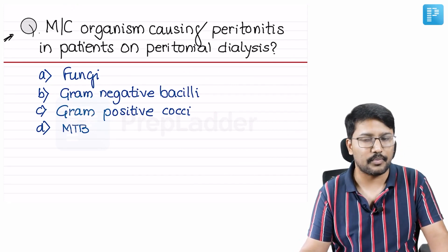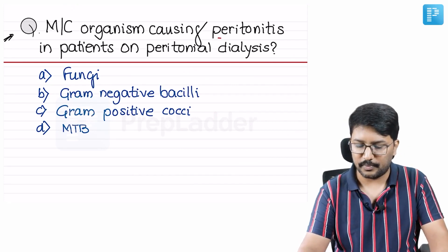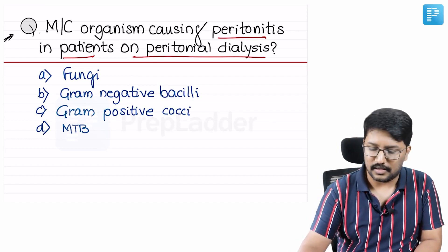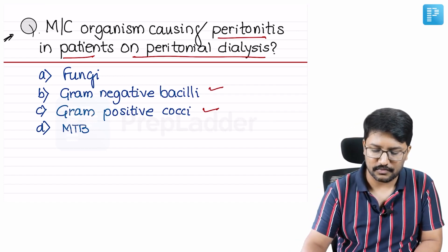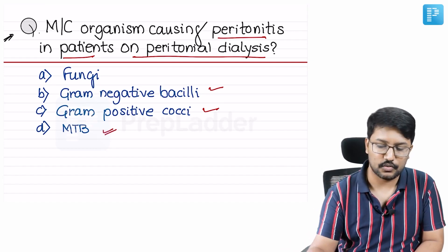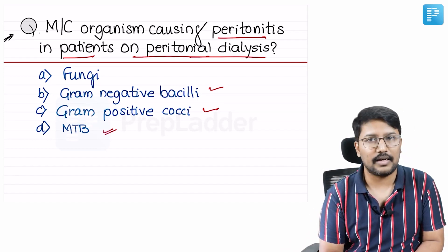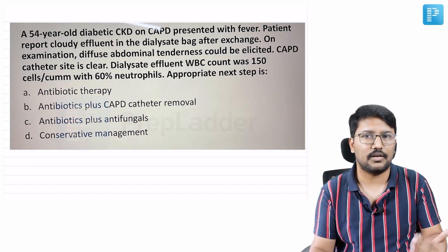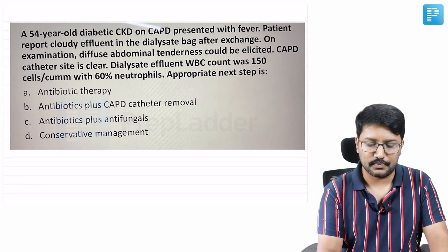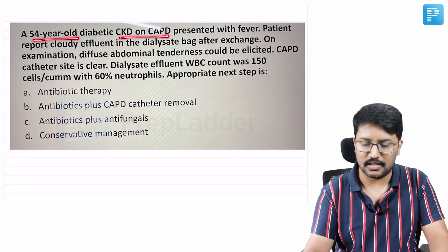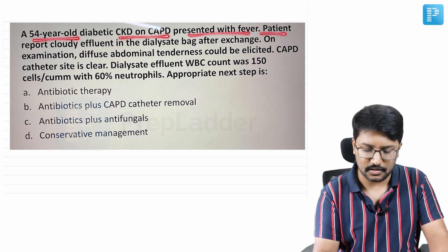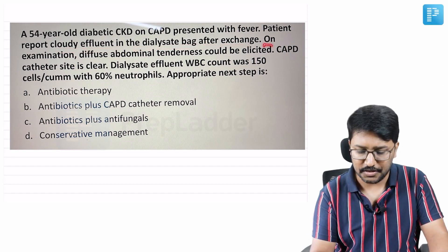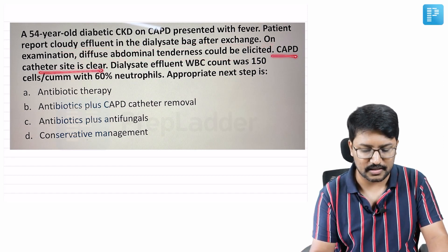Moving on to the next question — a last year INIS repeat: most common organism causing peritonitis in patients on peritoneal dialysis. Options are fungi, gram-negative bacillus, gram-positive cocci, and Mycobacterium tuberculosis. Case scenario: 54-year-old diabetic patient on CKD-CAPD presented with fever, cloudy effluent in the dialysis bag after exchange, and diffuse abdominal tenderness. CAPD catheter site is clear.